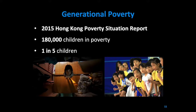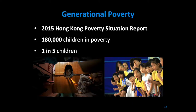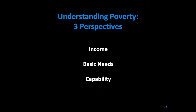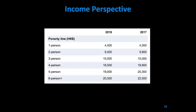Now that we better understand the idea of poverty, let's look at the different ways of understanding the seriousness of a poverty situation. There are three perspectives: income, basic needs, and capability. The income perspective is similar to what we discussed for relative poverty — it focuses on people living below the poverty line, which is the 50% mark of median monthly household income before tax and welfare transfers.